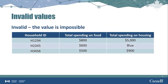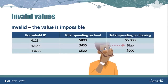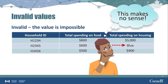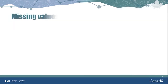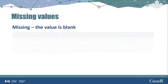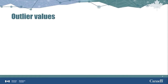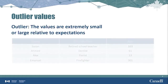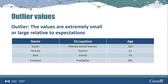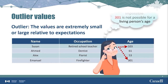Invalid data, on the other hand, has values that are impossible. An example would be a variable that should have a dollar amount, such as spending on housing, having the value 'blue' — that makes no sense. Missing values are where the variable is left blank; for example, we would expect either a zero or a number for the value of total expenses. Outlier values are extremely small or extremely large compared to what we would expect. Some outlier values are actually true — for example, a person's age could be 103 years, although this is quite rare. Other times, outlier values are also invalid, such as the value of 301 for a living person's age in years.